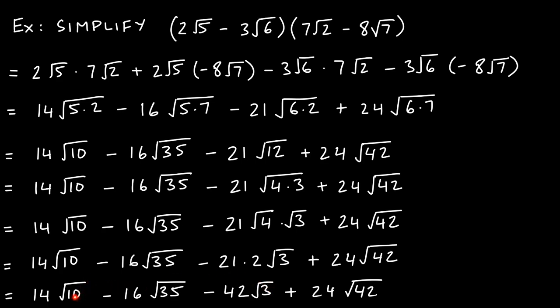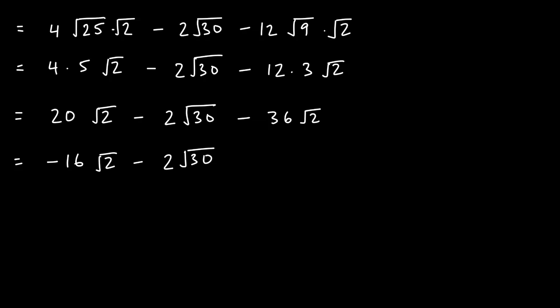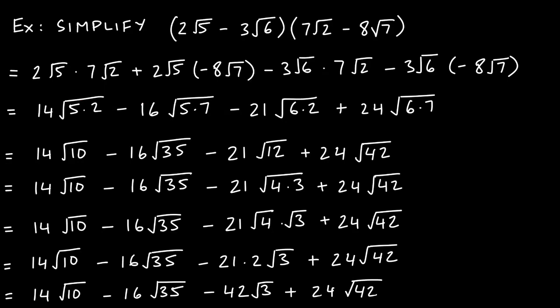Looking at the final terms: 14√10, −16√35, −42√3, and 24√42. We check — √3 is not a like term with any of the others because even though the indices match, the radicands all differ. So in this problem we can't combine any terms. The problem is finished. If you have any questions, please feel free to reach out — have a nice day.